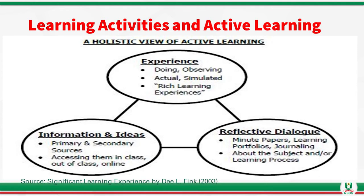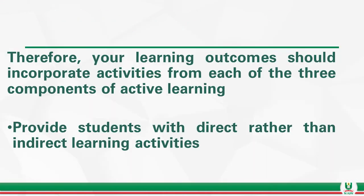Under information and ideas, there is a need for us to seek primary and secondary sources, accessing them in class and out of class, and putting them to learning. Therefore, your learning outcomes should incorporate activities from each of the three components of active learning, and provide students with direct rather than indirect learning activities.